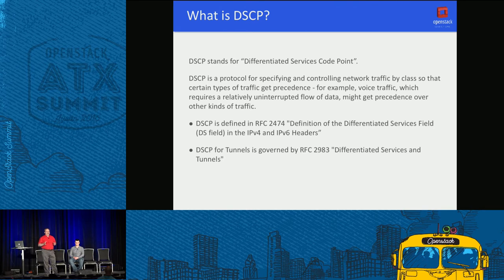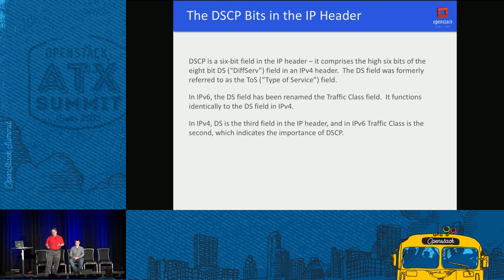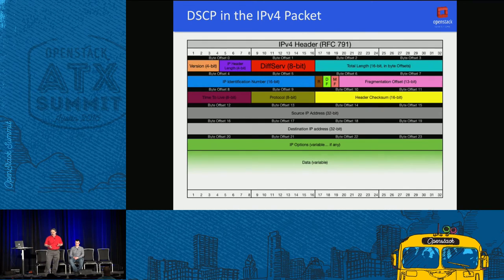DSCP is standards-defined in RFCs, primarily RFC 2474. There are a great number of RFCs that talk about and define DSCP and how it's managed. DSCP is a six-bit field in the IP header. There's a particular field called the diff-serve field - it's one byte, so eight bits. The top six bits of that define DSCP, and it exists in both IPv4 and IPv6 headers.